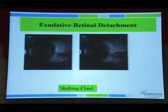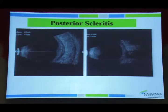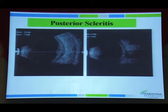To differentiate retinal detachment from choroidal detachment: choroidal detachment is dome-shaped, does not attach to the optic nerve head, and A-scan classically shows a double spike. In posterior scleritis, the B-scan shows the classic T-sign due to subtenance fluid accumulation.